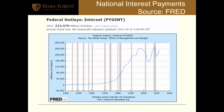Here is a graph showing federal outlays for interest payments on the debt — the debt service — beginning in 1940 through the end of this year, in millions of dollars. It shows an interesting pattern.